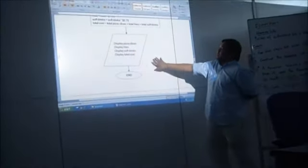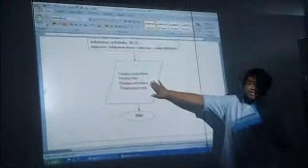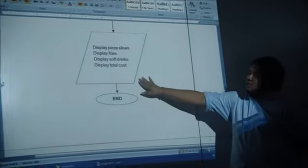This is the output: display pizza slices, display fries, and soft drinks, and total complete at the end.